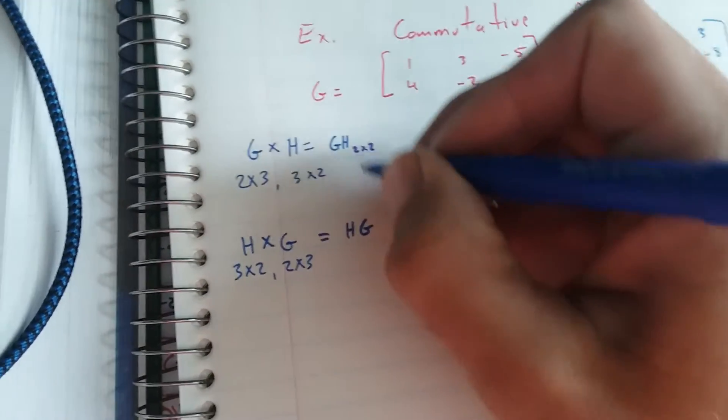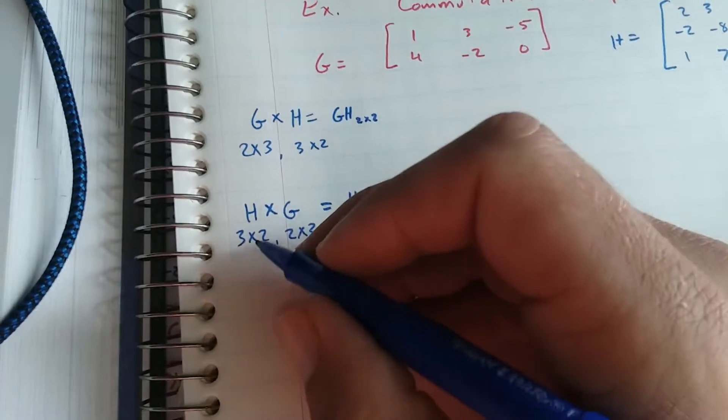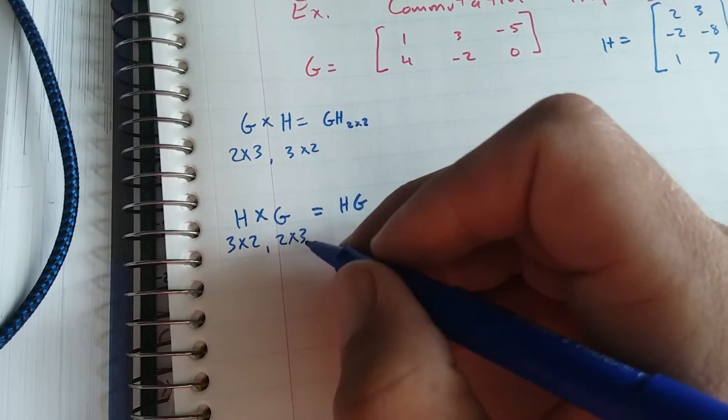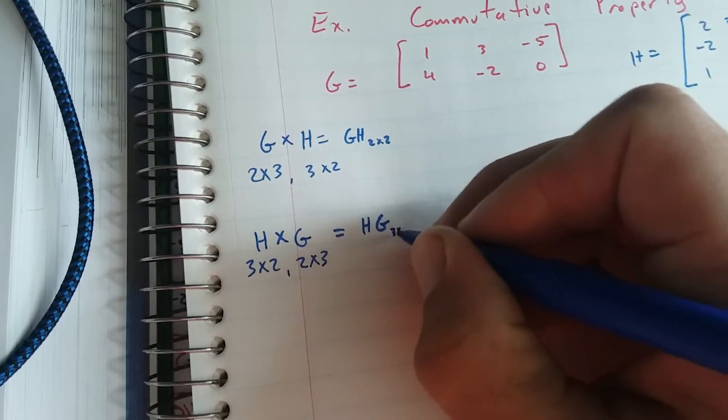That's going to be a 2 by 2 matrix. And when we do HG, we've got a 3 by 2 times a 2 by 3. Our product is going to be a 3 by 3.